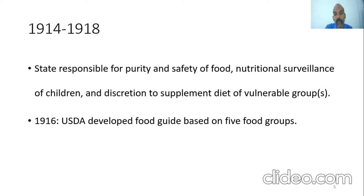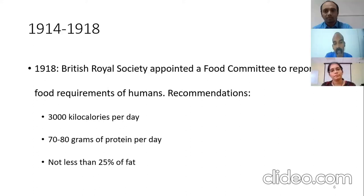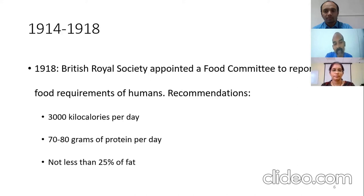During World War One, the state assumed responsibility for the purity and safety of food, nutritional surveillance of children, and supplementing the diet of vulnerable groups. By 1916, the United States Department of Agriculture developed a food guide based on five food groups. After the war in 1918, the British Royal Society appointed a food committee that recommended 3000 kilocalories per day with 70 to 80 grams of protein and not less than 25 percent from fat.